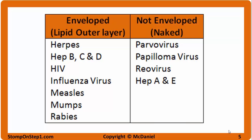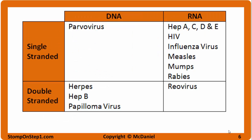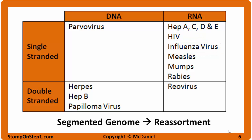Here is the table we keep referencing during our virus videos. You can see that the influenza virus is enveloped with a lipid outer layer. The virus also has a single-stranded RNA genome. Interestingly, the RNA is split into about 8 separate segments, similar to the rotavirus.